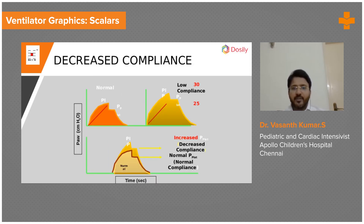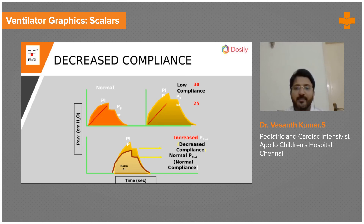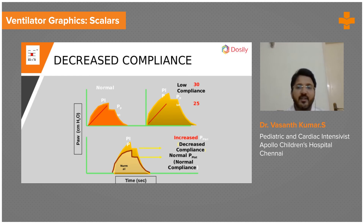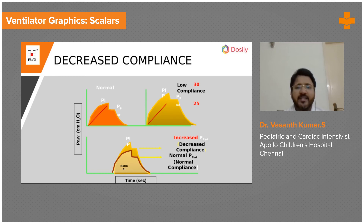In this scenario, the peak pressure is also 30, but the plateau pressure is 25 and the gradient is maintained. Out of 30, 25 is contributed by the plateau — your alveolar pressure — which indicates a poorly compliant lung. The causes of poorly compliant lung include severe pneumonia, ARDS where there is an alveolar problem, or pulmonary edema where there is edema in the alveoli.